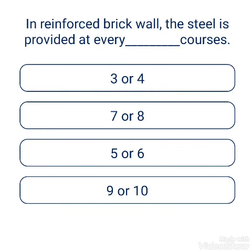Question: In reinforced masonry, the steel reinforcement is provided at every how many courses? Options: 3 or 4, 7 or 8, 5 or 6, 9 or 10. The answer is 3 or 4.